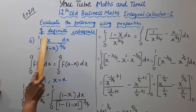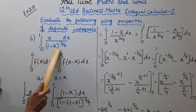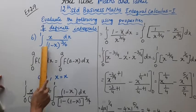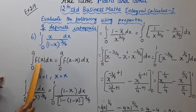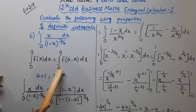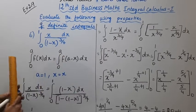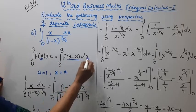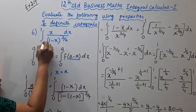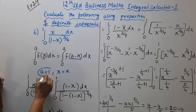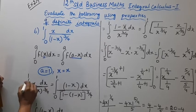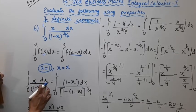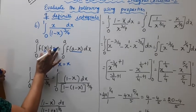Integration 0 to 1: x divided by (1 minus x), the whole power 3 by 4, dx. Using the property: integration 0 to a of f(x) dx equals integration 0 to a of f(a minus x) dx. Here a equals 1, so x is replaced by (1 minus x) in f(x) = x divided by (1 minus x)^(3/4).